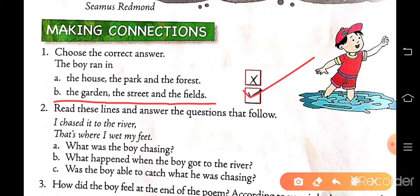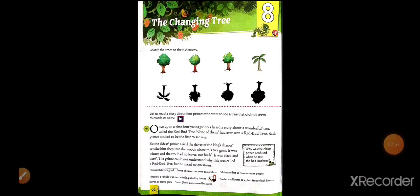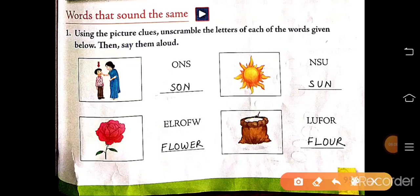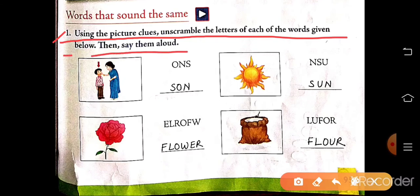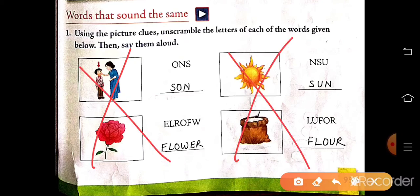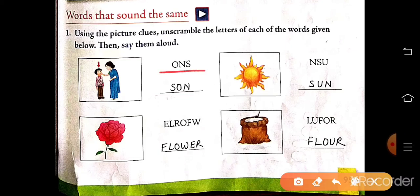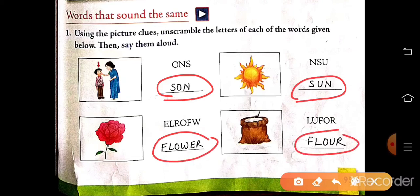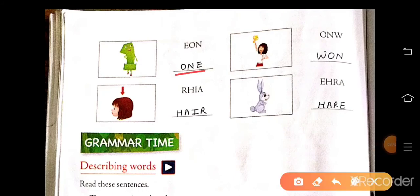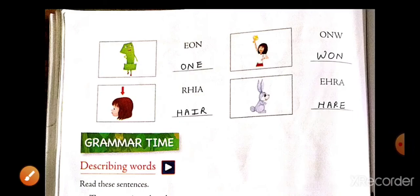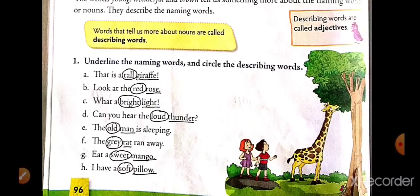Now next lesson. This is lesson number eight, The Changing Tree and its exercise. Open page number 95. Exercise one: using the picture clues, unscramble the letters to each of the words given below, then say them aloud. In the exam, pictures won't come, you have to do this work yourself. You have to unscramble the letters yourself. First it is S-O-N, sun. Second it is S-U-N, sun. This is flower, this is flower. Now next page. This is one and this is one here and here. Unscramble the letters and make the correct spelling.